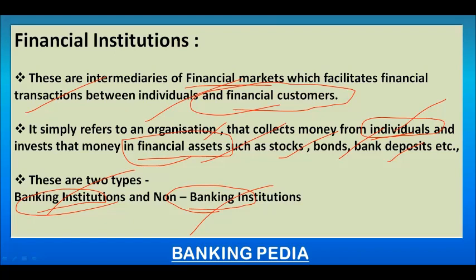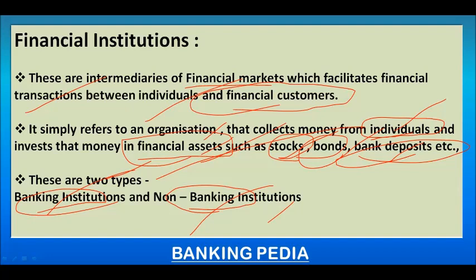For example, if you save one lakh rupees with a financial organization, they will pay you interest on that deposit. They then invest that money in financial assets such as stocks, bonds, and bank deposits. The returns they earn are used to pay interest back to their customers. This is the important work done by financial institutions.